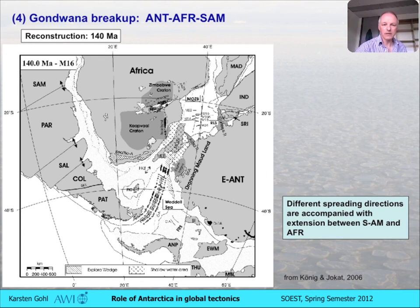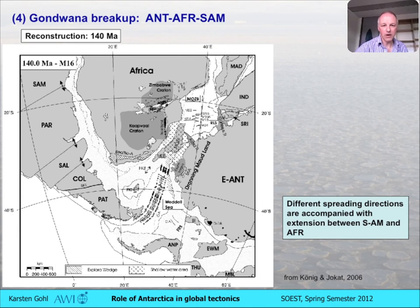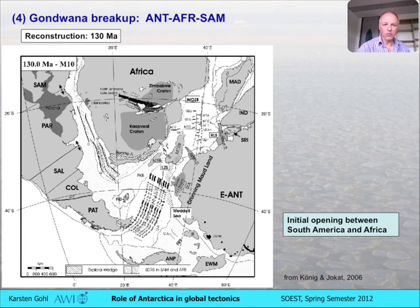The Weddell Sea spreading continued, but it's quite oblique towards the spreading direction of the Riiser-Larsen Sea — basically differing by about 90 degrees. These different spreading directions are accompanied by extension between South America and Africa, and you can see the arrows at the Falkland Plateau. Africa then moves away, causing the crust to stretch between South America and Africa. Eventually spreading is fully going on in the Weddell Sea, the Riiser-Larsen Sea, and also in the southernmost Atlantic.